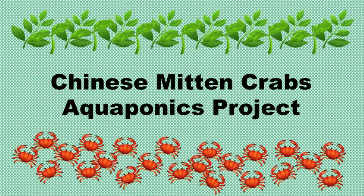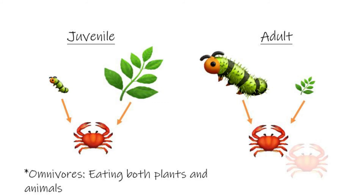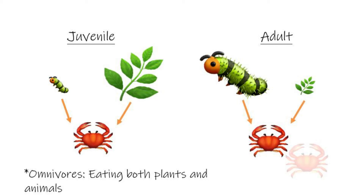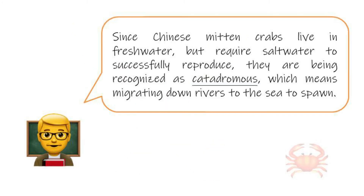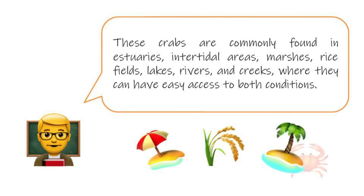Chinese mitten crabs are omnivores, eating both plants and animals. Juvenile crabs eat primarily vegetation. As they mature, the crabs increasingly prey on animals, including worms and clams. However, predatory fish including sturgeon, striped bass, and channel catfish, as well as bullfrogs, raccoons, river otters, and wading birds may prey upon the crab. Since Chinese mitten crabs live in fresh water but require salt water to successfully reproduce, they are recognized as catadromous, meaning they migrate down rivers to the sea to spawn. These crabs are commonly found in estuaries, intertidal areas, marshes, rice fields, lakes, rivers, and creeks, where they can have easy access to both conditions.